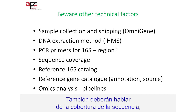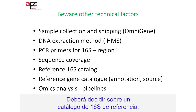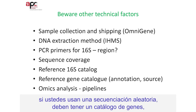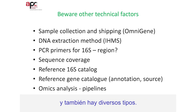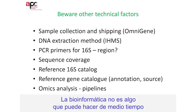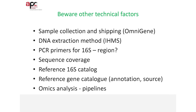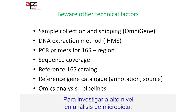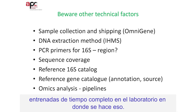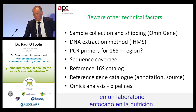You should also talk to an expert about sequence coverage, which is governed to a small degree by how much money you have. You need to decide on a reference 16S gene catalog, and there are competing kinds. If you're going to do shotgun sequencing, you need to have a gene catalog. Lastly, you need a bioinformatics pipeline. Bioinformatics is not something that can be done part-time by a postgrad who's also collecting samples. To do top-end research on microbiota analysis, you need dedicated people who have been trained in a lab which does this full-time.